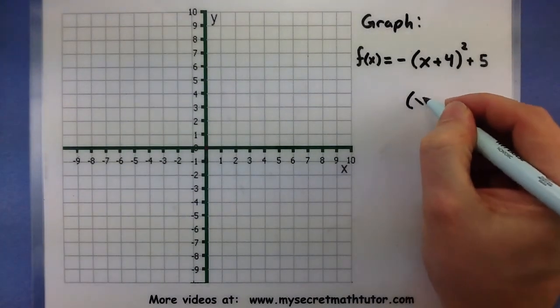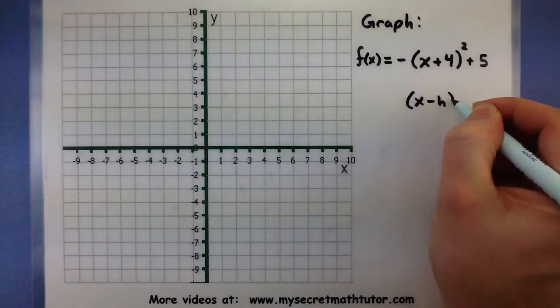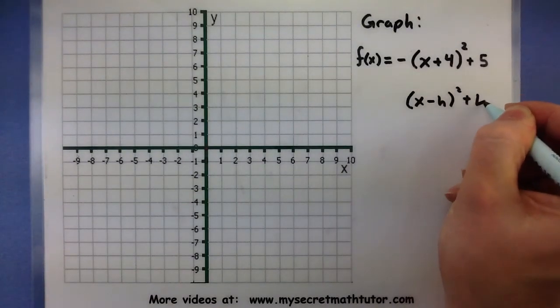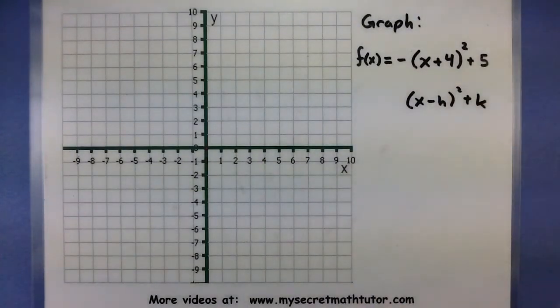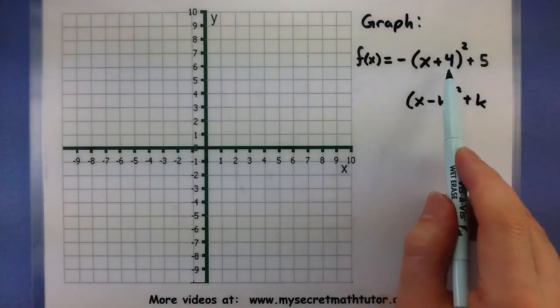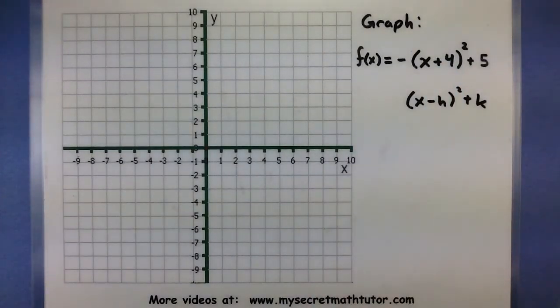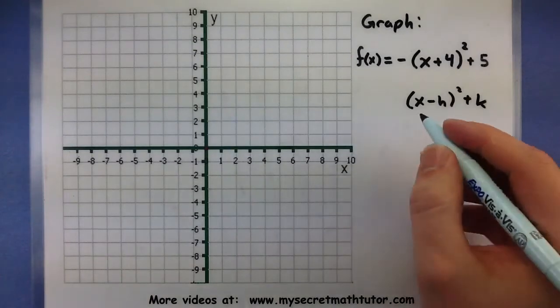Remember, when this is written in standard form, it's a minus h and a plus k. The reason why that's important is because it tells me that the value of h here must be a negative 4.